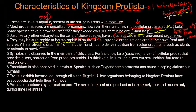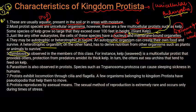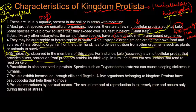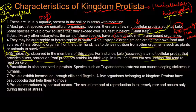Protista also show symbiotic relationships, where both organisms are benefited. For instance, kelp seaweed is a multicellular protist that provides otters protection from predators. In turn, otters eat sea urchins that tend to feed on kelp. This is a mutualistic relationship between the seaweed and the sea otters.